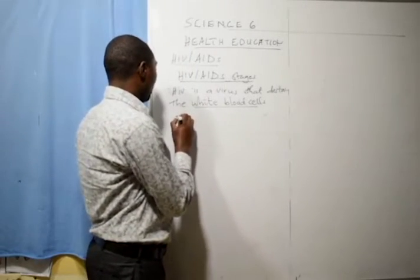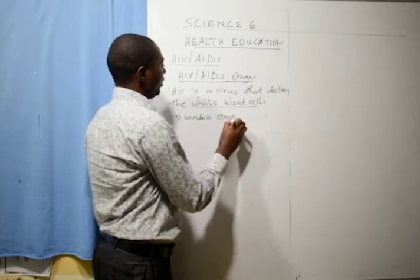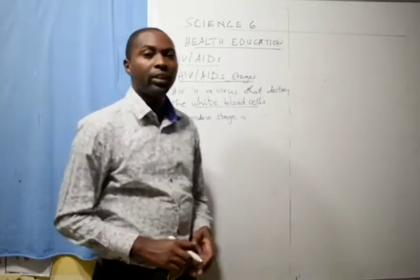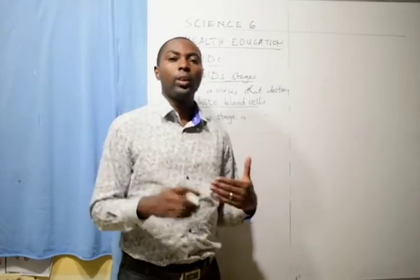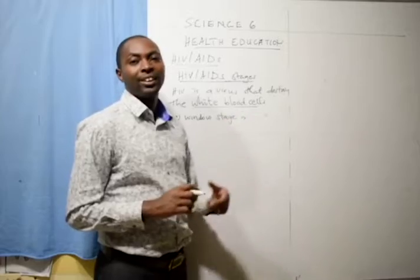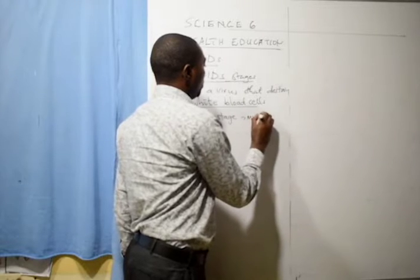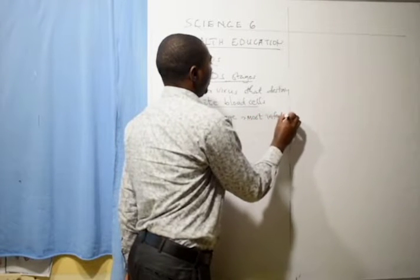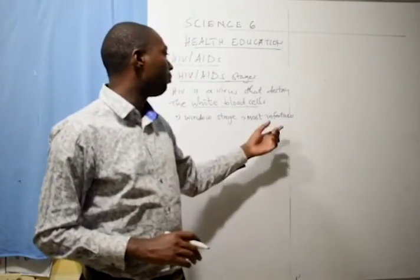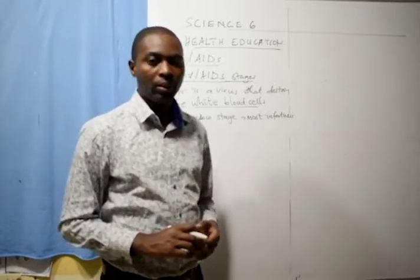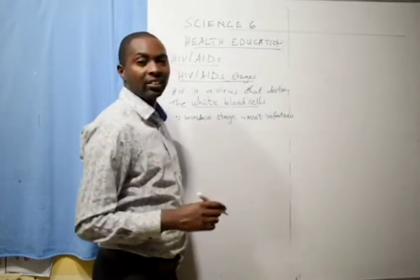In the four stages, stage number one we call it the window stage. This is the period between the entry of the virus until it is first recognized by the white blood cells in the body. At this period, this period is the most infectious — most infectious. Why? Because medical tests cannot show the presence of the HIV virus at this time.